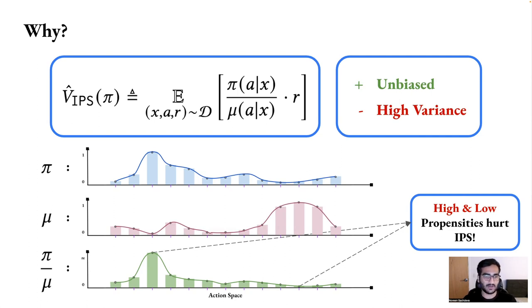I'll quickly show this with an example. So here, let's consider π, which is the target policy we are evaluating, and μ, which is the logging policy which we use to collect our data. And at the end, I plot the ratio of these two over all actions. And what literature tells us is that the high and the low propensity values, propensity here being the ratio, really hurt IPS in terms of variance and in turn the mean squared error.